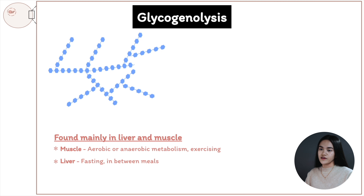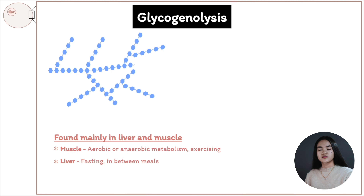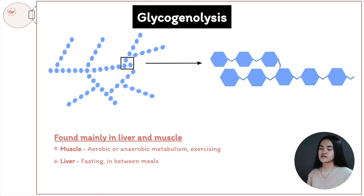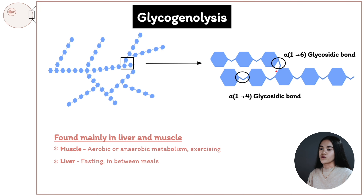In the liver we use glycogen during fasting — when glucose from the diet is not available, like in between meals — and this helps other tissues with energy, like the brain and neurons, because the brain can't use fatty acids. Glycogen is a polymer of glucose, and these glucose molecules in linear form are linked via alpha 1-4 linkages or glycosidic bonds.